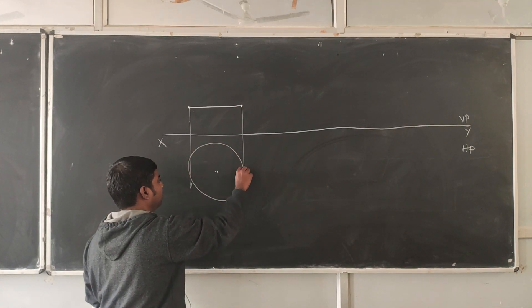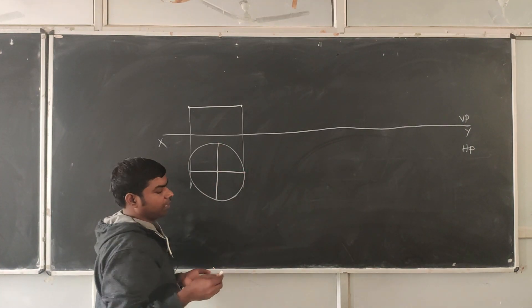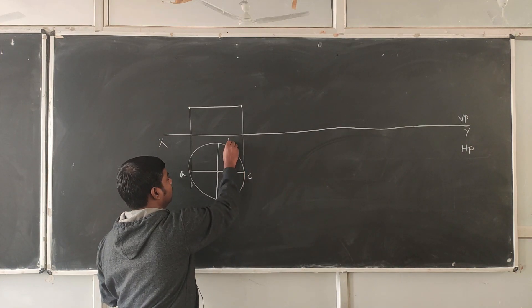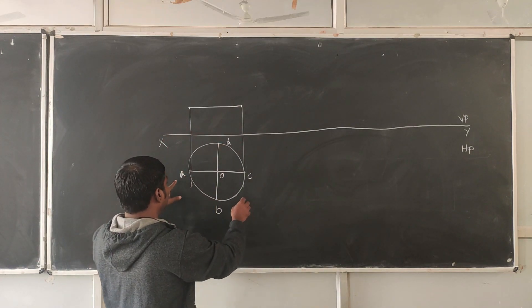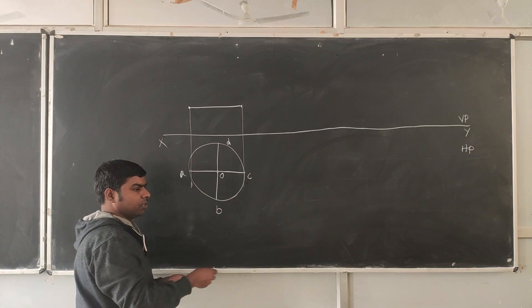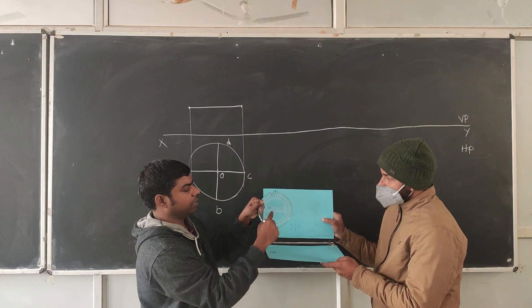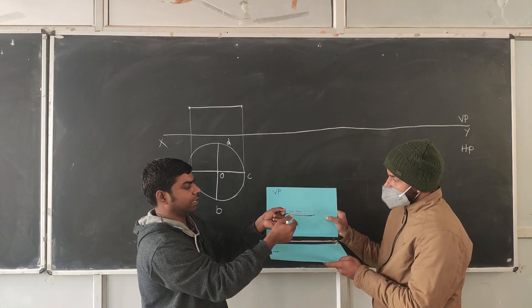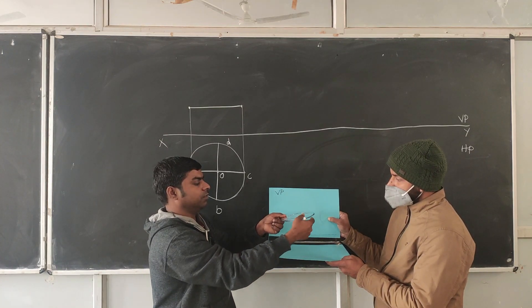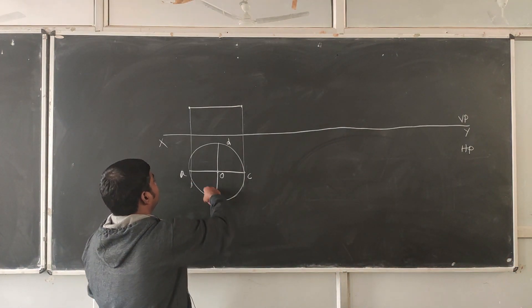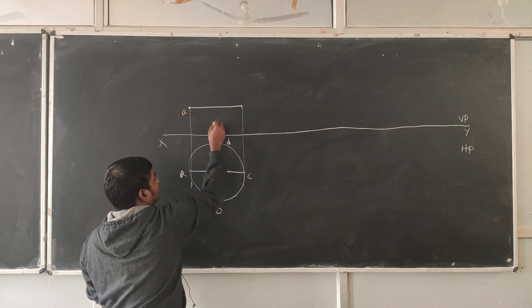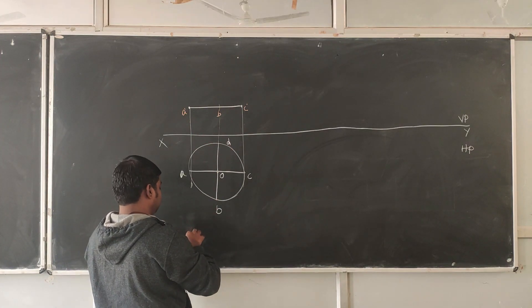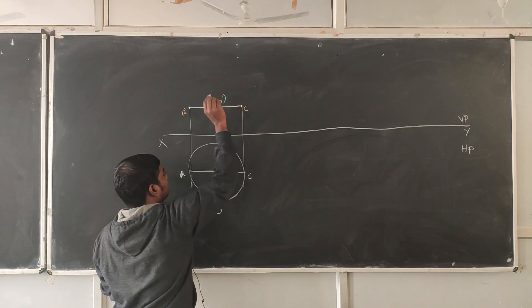Draw the top side view — make one small circle and divide it into four equal parts, or eight equal parts. Label the divisions a, b, c, d with origin O. Now extend and check: a, b, c are visible from the front side view. Since the circle is parallel to HP and perpendicular to VP, a, b, c are visible and d is hidden. In the front side view: a is visible, b is visible, c is visible — extend lines for each. D is invisible, so put it in brackets.